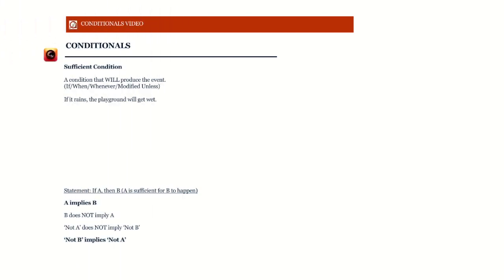We'll start a discussion with sufficient conditions. A sufficient condition is one that will produce the event — it is enough alone to produce the event. For example, if it rains, the playground will get wet. Raining is enough for the ground to get wet; you don't need anything else along with the rain to get the ground wet.